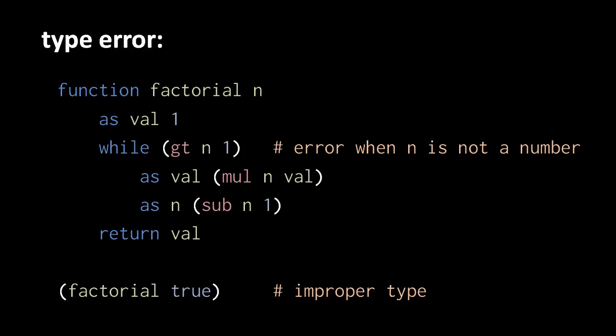For example, in this pigeon code, we define a function which computes a factorial. In the third line of the function, the parameter of the function n is used in a greater than operation. So if we improperly invoke the factorial function with a boolean argument instead of a number, a type error is triggered in the function because the greater than operation only works with number operands, not booleans.